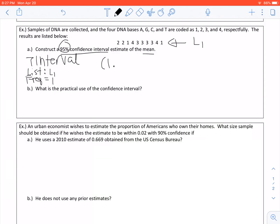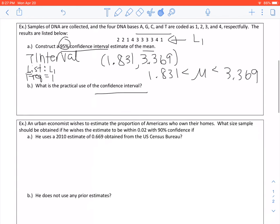Go ahead and do that. Your values are 1.831, 3.369. Again, another way to write this because we are talking about the mean is between 1.831 and 3.369. The practical use of this confidence interval, there isn't anything saying that the mean values are between these because this actually codes to letters. Again, not very relevant for you guys, but calculating that confidence interval will be.